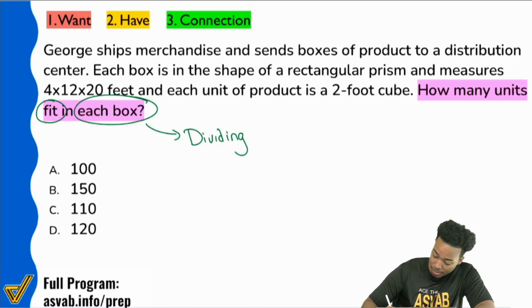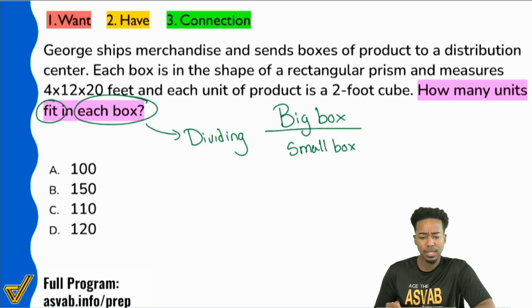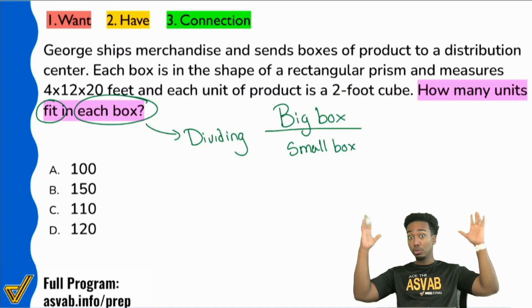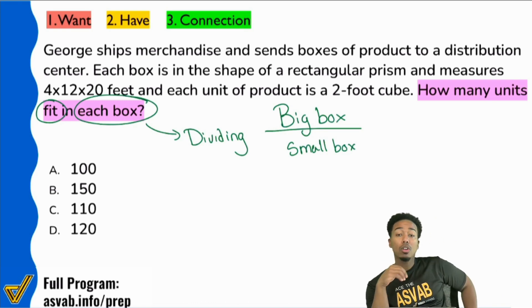You are dividing. And you're going to say, basically, your big box divided by the small box. Because if we read the actual information, I'm just going to go through it once in English. Hey, George ships merchandise and sends boxes of product to a distribution center. Each box is in the shape of a rectangular prism and measures this by that by that. And then each unit of product is a two-foot cube. Okay, so yes, we have a rectangular prism, but notice what they give you. The dimensions. That first huge box, 4 by 12 by 20, length, width, height, or 4 by 12 by 20.